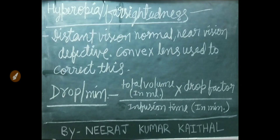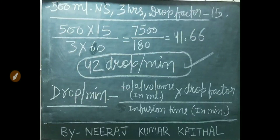Formula to calculate drops per minute: total volume in ml multiplied by drop factor, divided by infusion time in minutes. Example: 500 ml normal saline to be administered in 3 hours with a drop factor of 15. Calculation: 500 × 15 ÷ (3 × 60) = 41.66, so approximately 42 drops per minute will complete 500 ml in 3 hours.